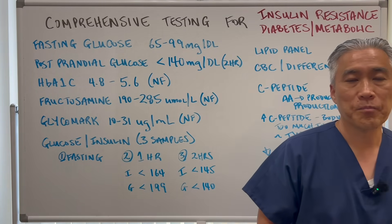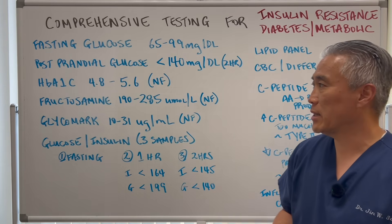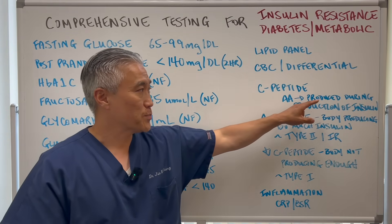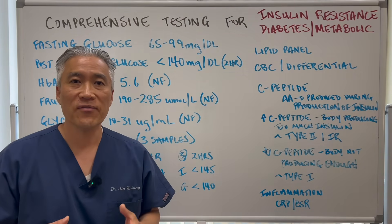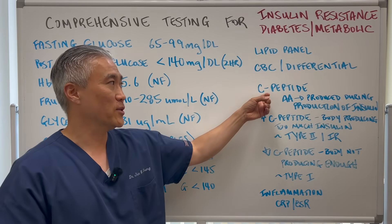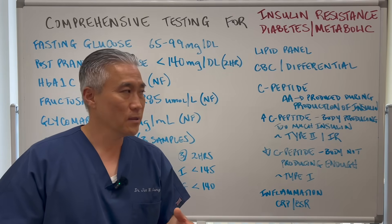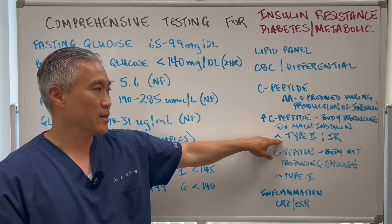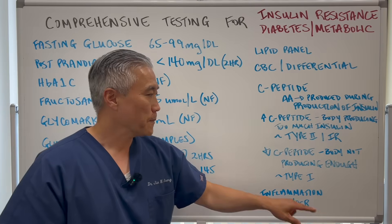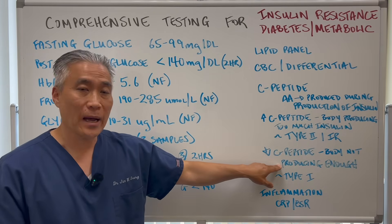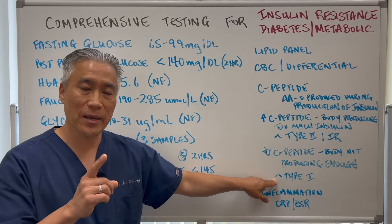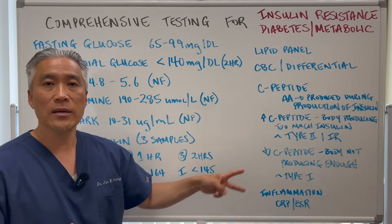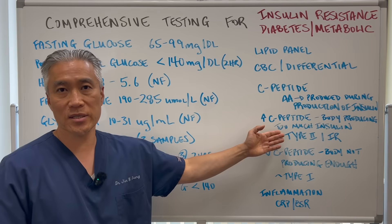Hemoglobin A1c is essentially sugar attached to hemoglobin, so anemia will impact that result. Another marker is C-peptide, a short-chain amino acid produced when insulin is produced, but with a longer half-life than insulin. Elevated C-peptide means the body is producing too much insulin, helping diagnose type 2 diabetes or insulin resistance. Low C-peptide means the body is not producing enough insulin, helping diagnose type 1 diabetes — the autoimmune version where the pancreas isn't producing insulin. So C-peptide helps differentiate type 1 from type 2 diabetes.